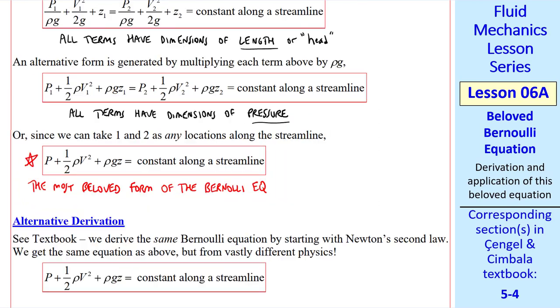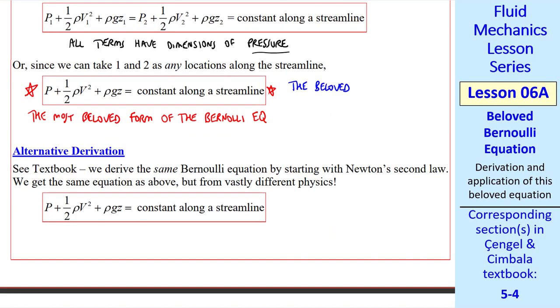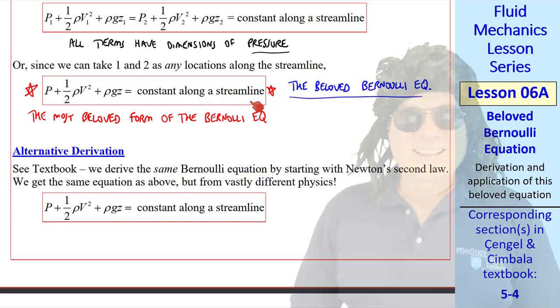So this equation in general says that this grouping of terms is constant along the streamline, which I write here. This is the most beloved form of the Bernoulli Equation. P + ½ρV² + ρgz = constant along a streamline.